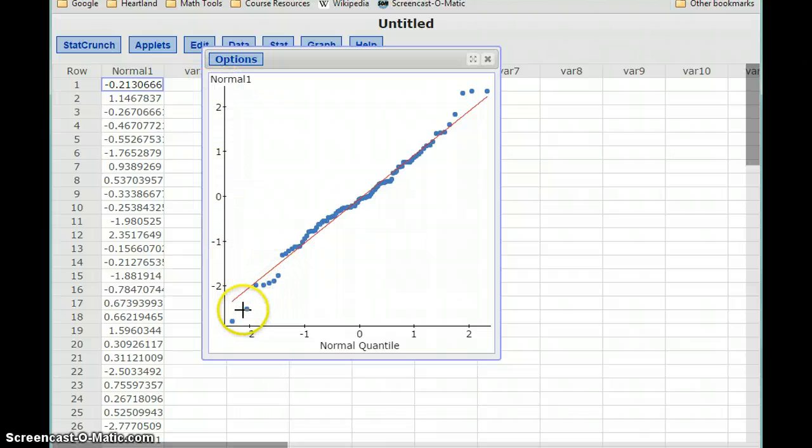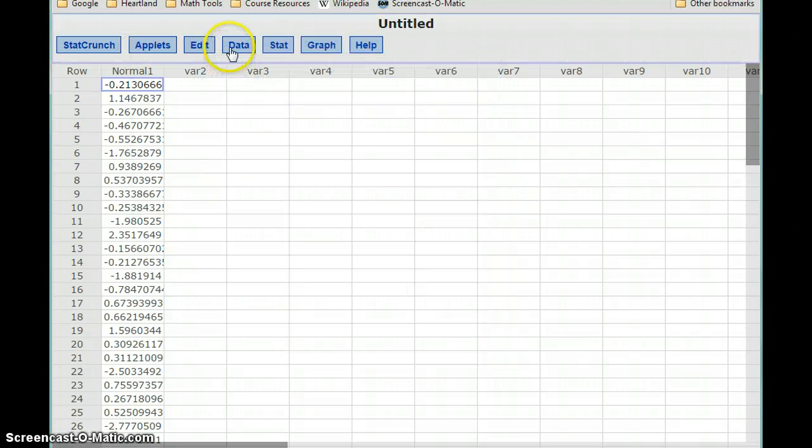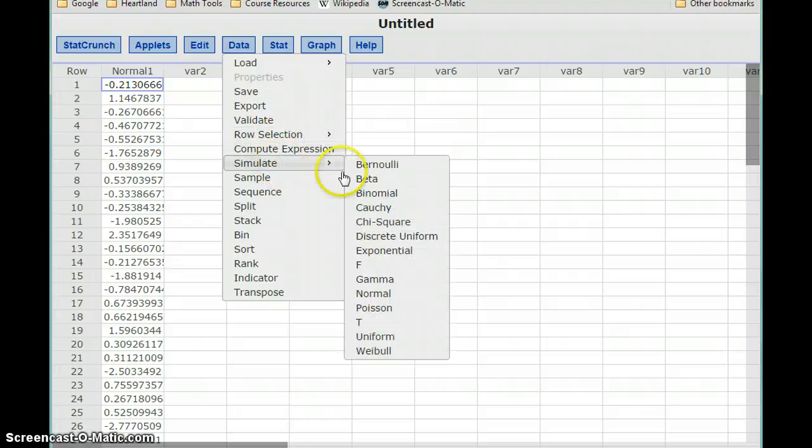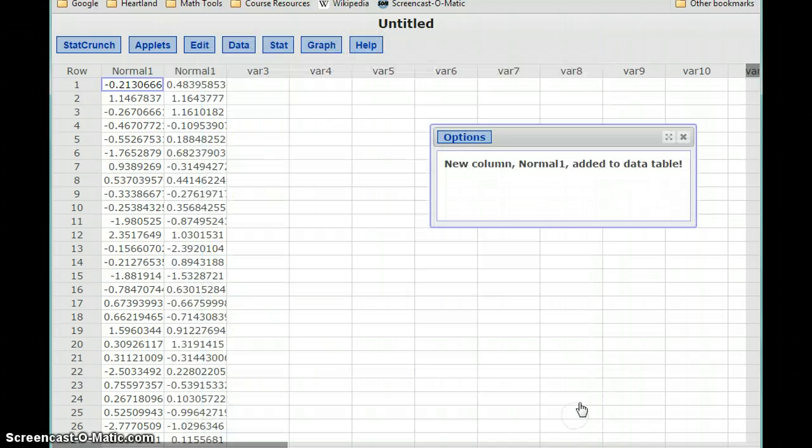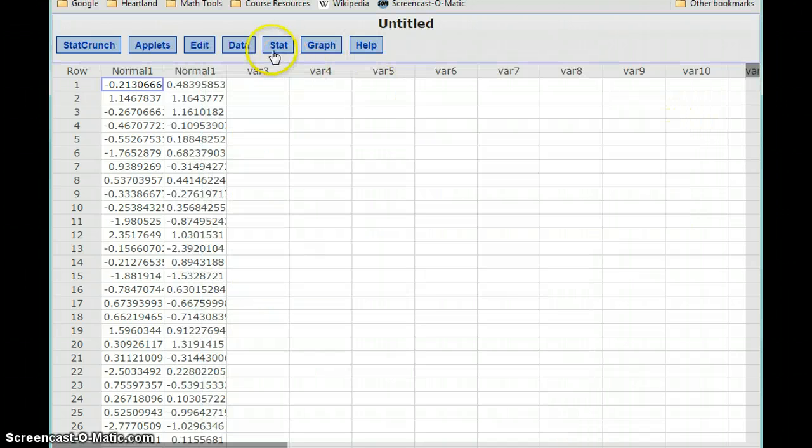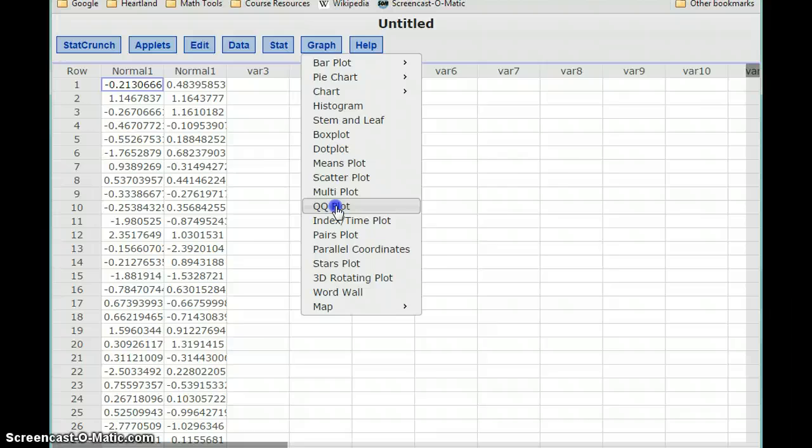So on the ends, we see some values that are kind of a little different from this straight line pattern. They're kind of veering off at the extremes there. But the bulk of this data follows this straight line pattern incredibly well. So if we have a normal distribution, that's what we should expect to see. And we could even take this a little bit more extreme if instead we simulated our normal distribution, say got a thousand different data values.